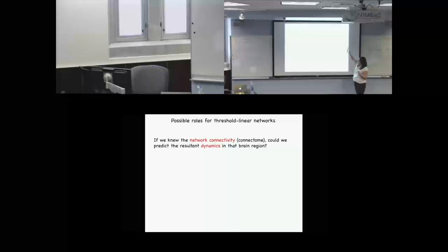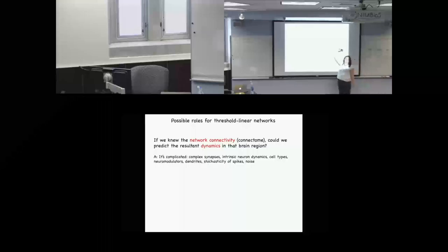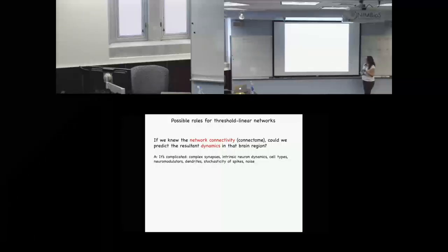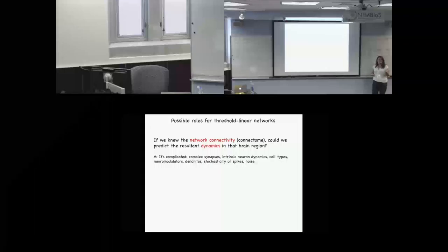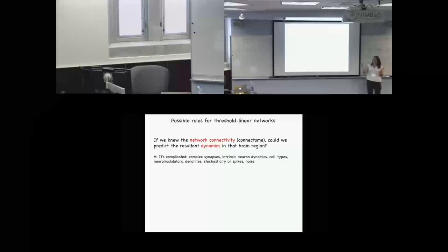Even if we knew the connectome, we still couldn't say exactly what the dynamics would be. There are all of these extra components: complex synapses, possible intrinsic neuron dynamics, lots of different cell types, different roles for neuromodulators, dendritic connections — so much going on that we still don't know how to predict dynamics from connectivity alone.